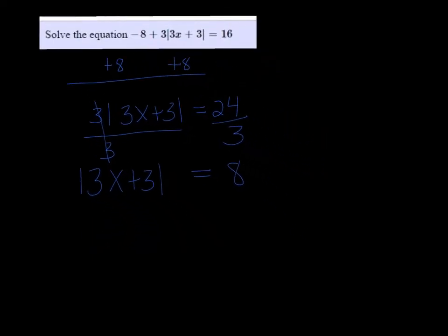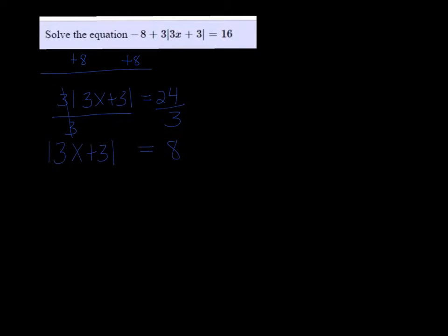From there you'll proceed like you did before, where you break it up. I have two equations, 3x plus 3 equals 8, and 3x plus 3 equals negative 8.